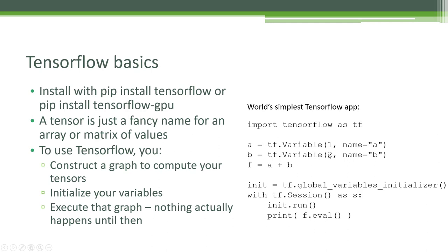We set up a B variable assigned the value two and given the name B. Then we say F equals A plus B. You might think that would put the number three into variable F, but it doesn't. What F actually is, is your graph — the actual connection you're building up between the A and B tensors. F equals A plus B does nothing except establish that relationship and dependency between A and B in the graph you're creating.